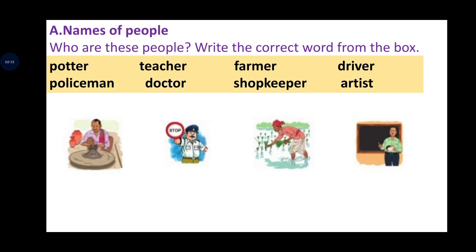The words given in the box are: teacher, farmer, driver, policeman, doctor, shopkeeper, artist. The first picture is a farmer. Number four is a teacher. Now we have seen what we have to do — fill in the brackets with the correct word for each picture.